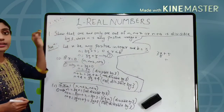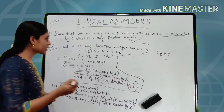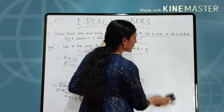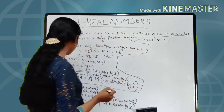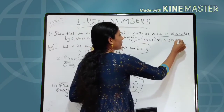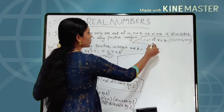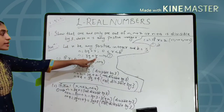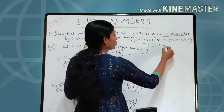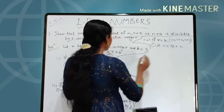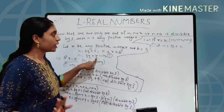Now take R = 2, because R can take values 0, 1, and 2. We have done R = 0 and R = 1. For the third case, if R = 2, equation 1 becomes N = 3Q + 2. N + 2 becomes 3Q + 2 + 2 = 3Q + 4. N + 4 becomes 3Q + 2 + 4 = 3Q + 6 = 3(Q + 2).